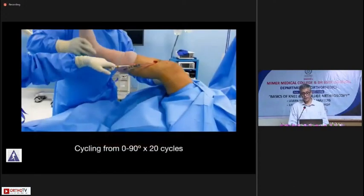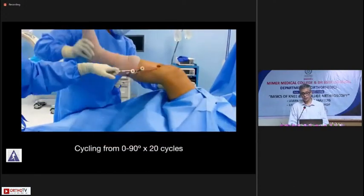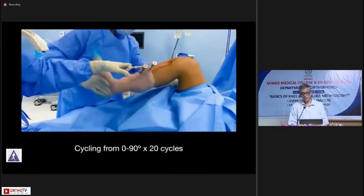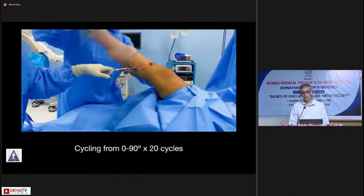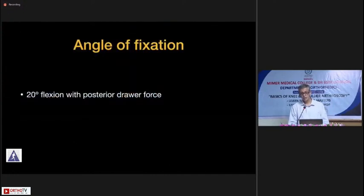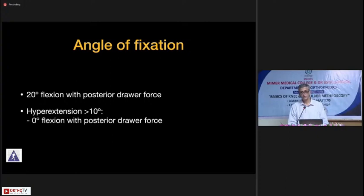After the reconstruction, I cycle the knee from zero to 90 degrees for about 20 cycles — using a tensioning device or your hands — to remove any creep from the collagen fibers. Then we fix the tibial side with an interference screw. The angle of fixation is usually about 20 degrees of flexion. However, in patients with hyperextension greater than 10 to 15 degrees, I fix it at full extension to allow less graft capture, which is very important.